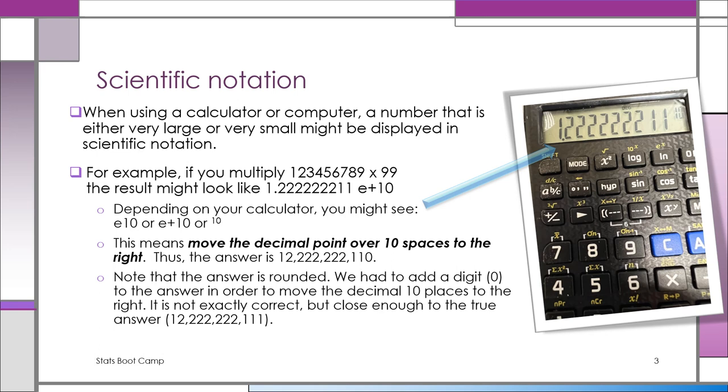So here we have an example where we take 123456789, big number, multiply it by 99 to make it an even bigger number. And what does the calculator tell you? 1.22222211, E plus 10. Okay, scientific notation. The calculator in the image over there doesn't even use the letter E, so you might be even more confused. Different calculators and different apps will give you different displays for scientific notation.